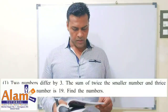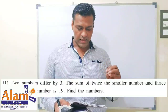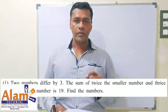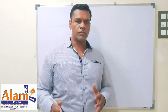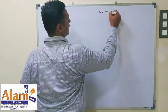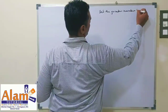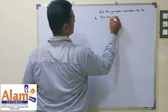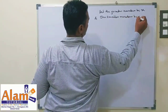Now the first sum of Practice Set 1.5 says: Two numbers differ by 3. The sum of twice the smaller number and thrice the greater number is 19. Find the numbers. Now students, there are two numbers — one is greater and one is smaller. So let the greater number be x and the smaller number be y.